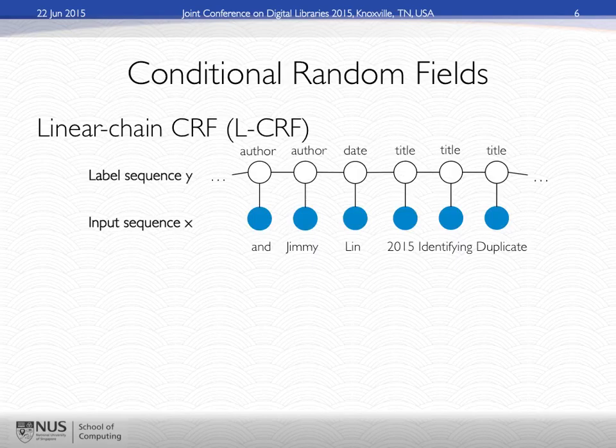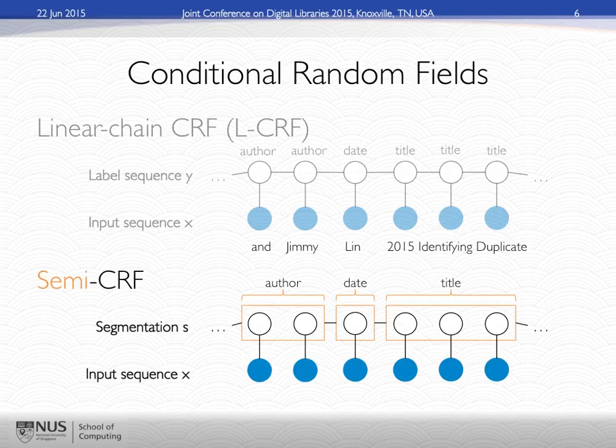Here's the linear CRF for reference. And when we go to the semi-CRF, this is what it looks like — a plain old semi-CRF that Sunita wrote about in 2004. Basically, what it means is we have same-type labels, like authors — several tokens that represent an author or a date. They're all tied together, and we can make features over each of these segments.